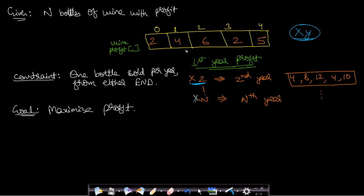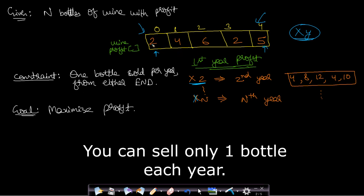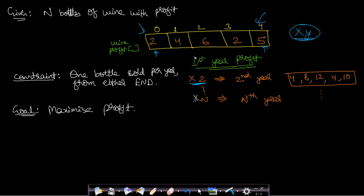Another constraint is that you can sell the bottle either from the left-hand side or from the right-hand side. You cannot sell any bottle from the middle at random — you can only sell the end bottles. In this case you can sell either 2 or 5. The goal is to maximize the profit: in what order will you sell to get the maximum profit?